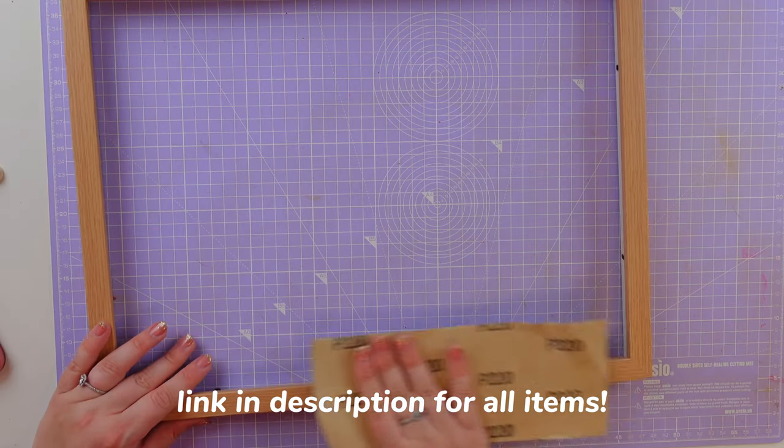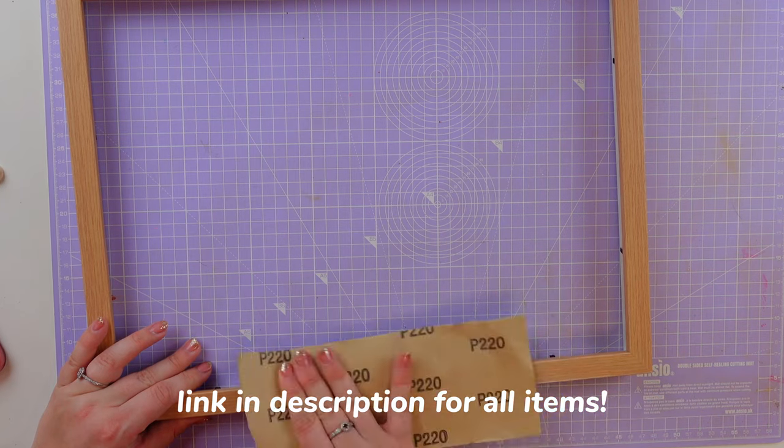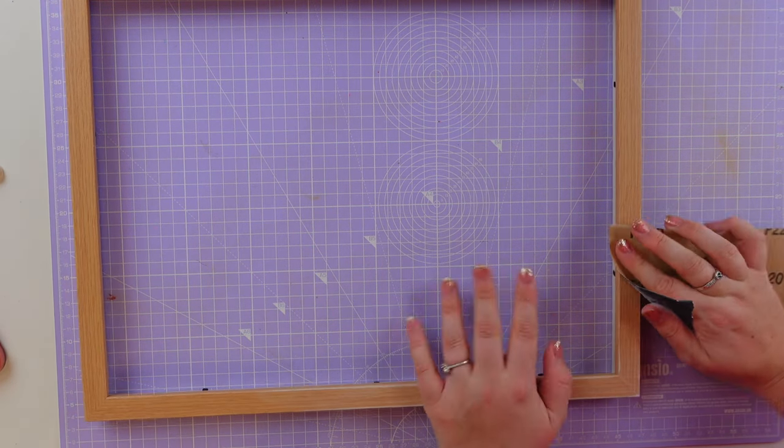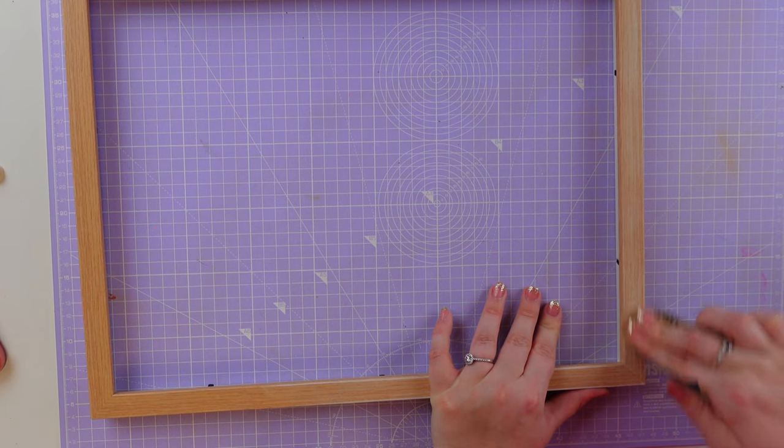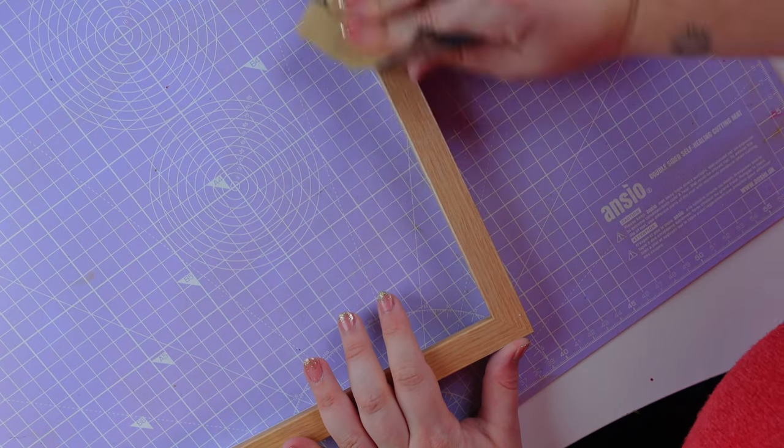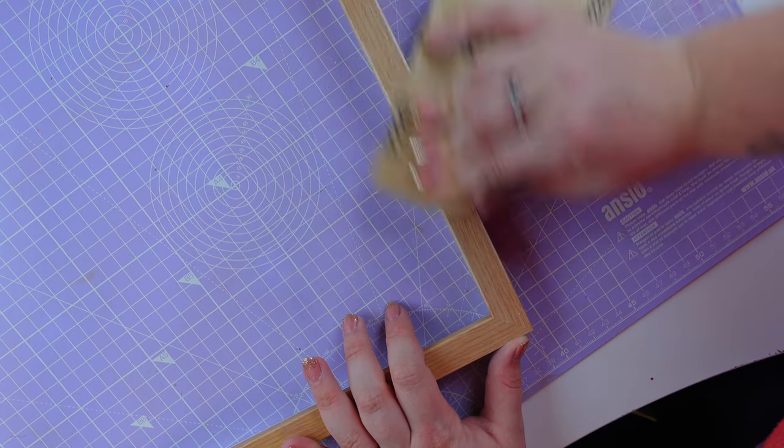Everything is linked on my Amazon storefront and then I am just sanding the frame really lightly, literally just spending about a minute on each frame and it's just about creating a key so that the glue can stick to it.